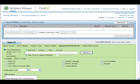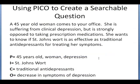For this example, we are going to use the search that I mentioned in the introductory video for this class. A 45-year-old woman comes to your office. She is suffering from clinical depression but is strongly opposed to taking prescription medications. She wants to know if St. John's wort is as effective as traditional antidepressants for treating her symptoms.